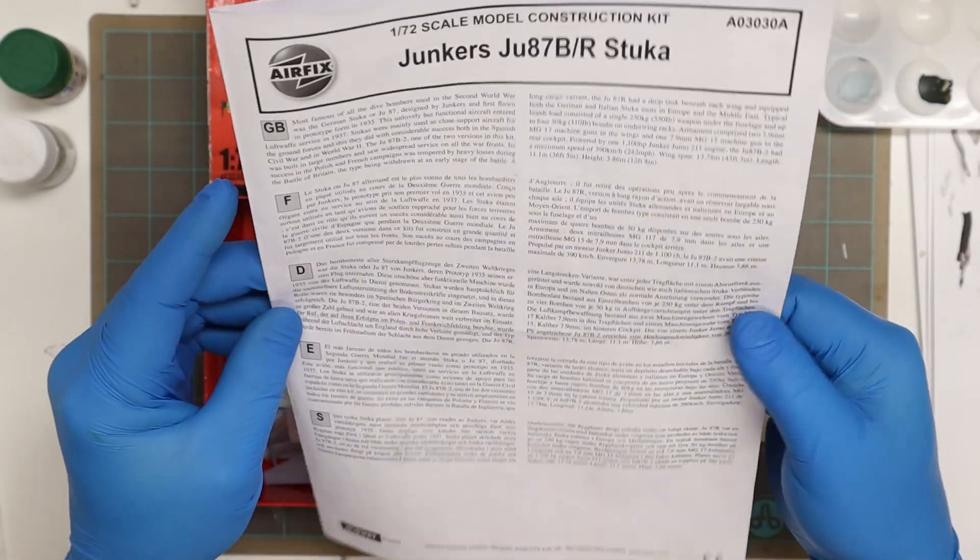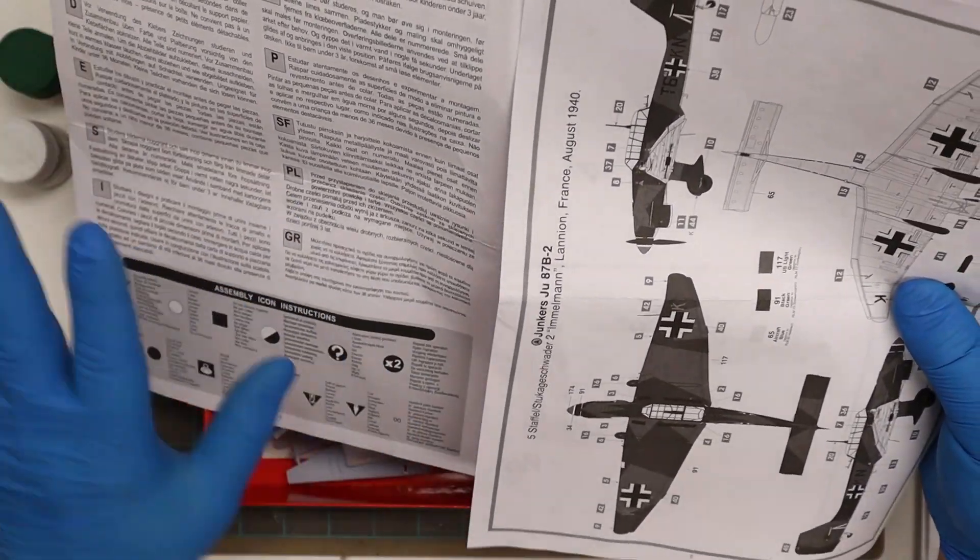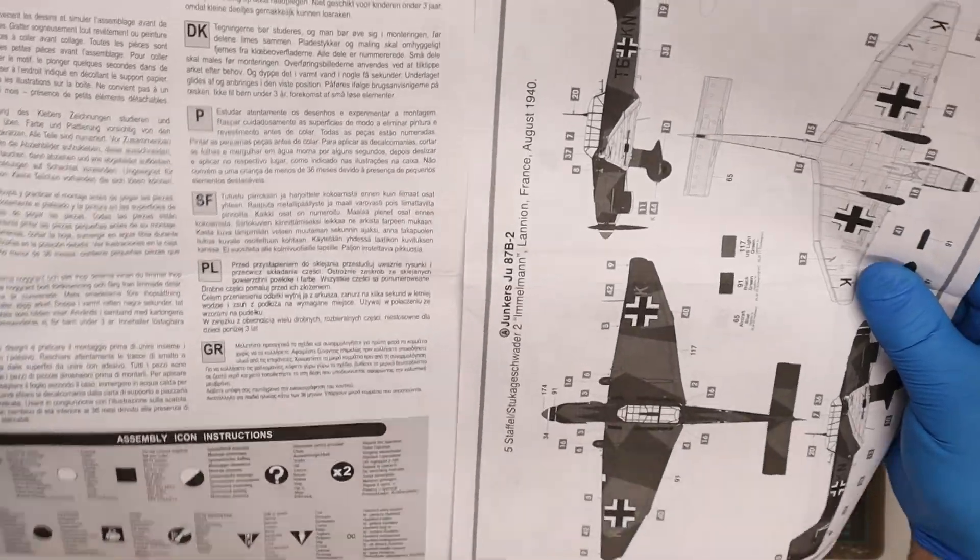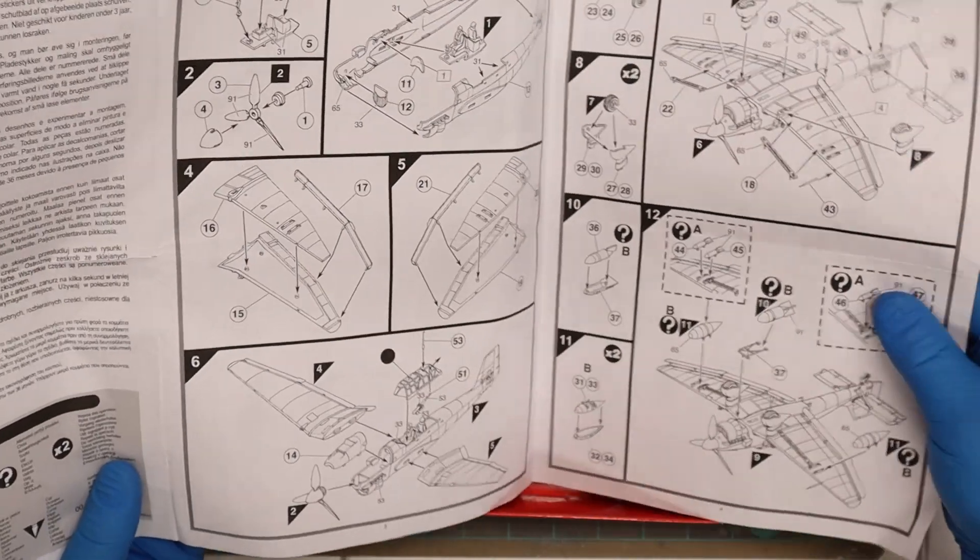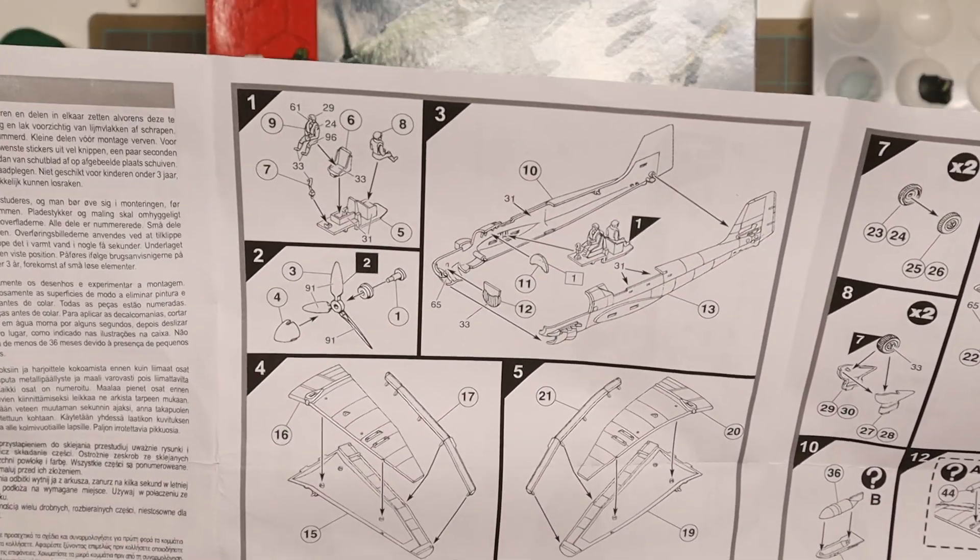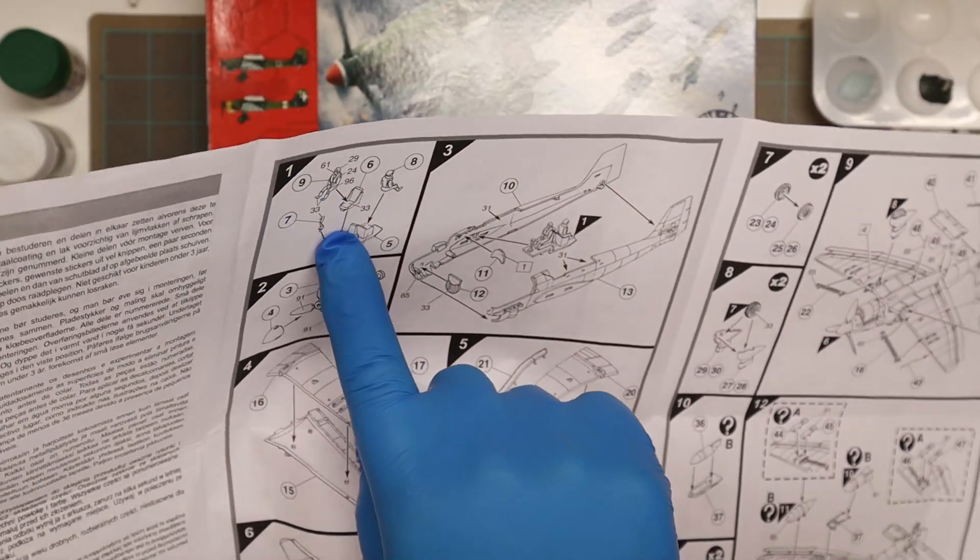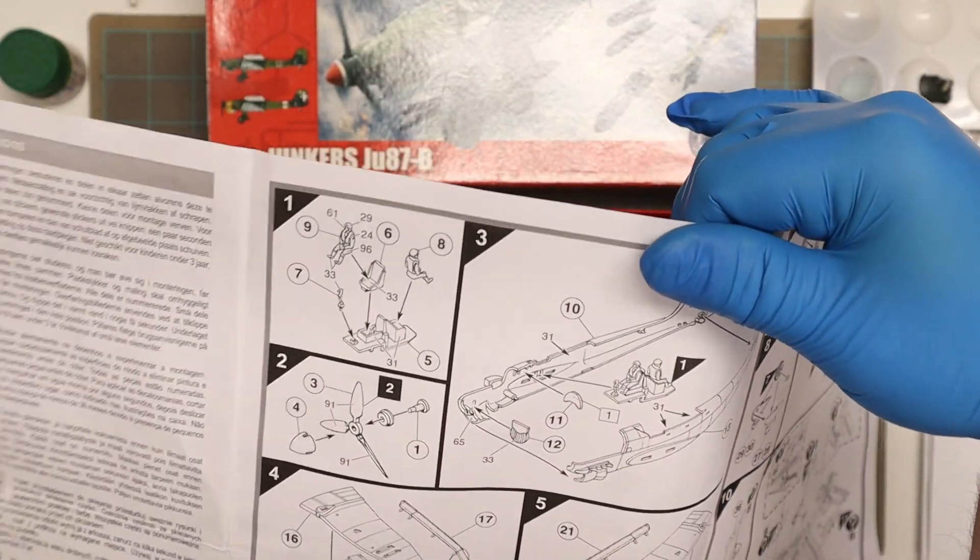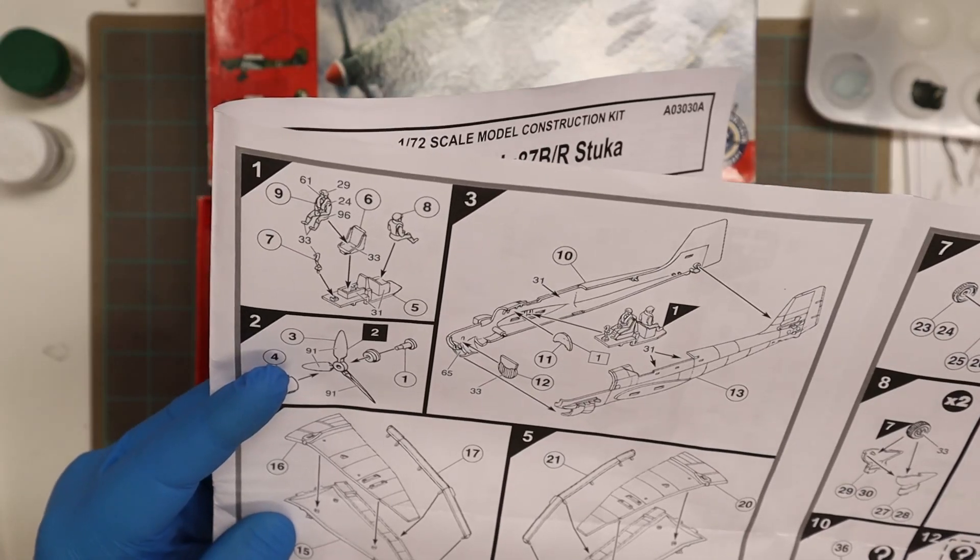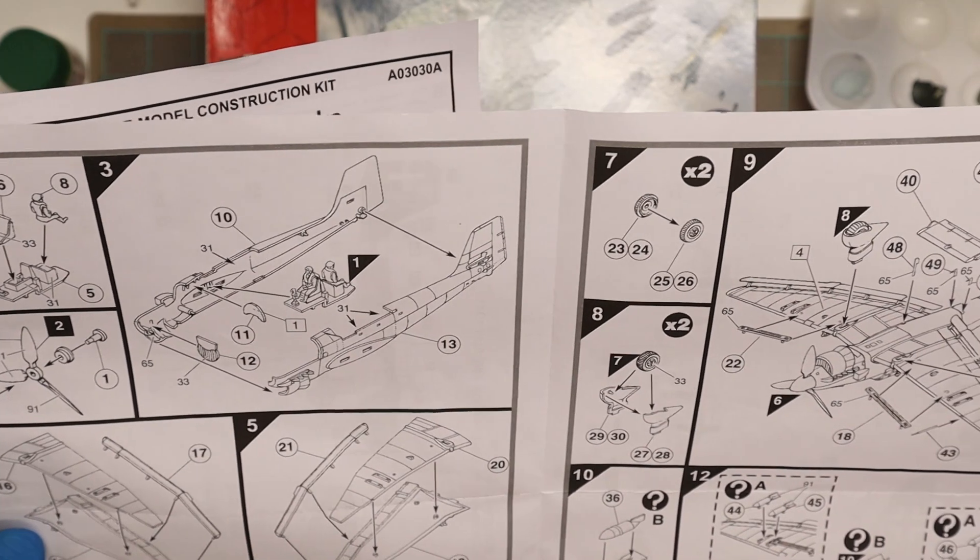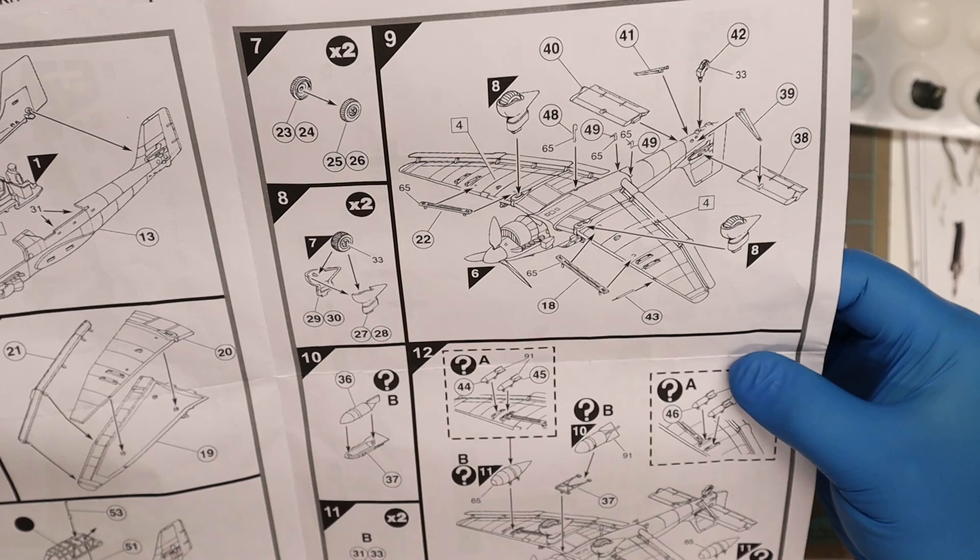We open it up and it gives you a basic assembly icon instruction sheet in multiple languages. Looking at the instruction sheet, the basic instructions look pretty good. There are a lot of Humbrol number codes for the paints, interior colors, and different colors of the parts. If you're using Humbrol it's great, or you can cross-reference if you're using other paint models. It's a good instruction sheet, it's pretty detailed.